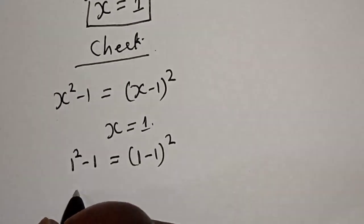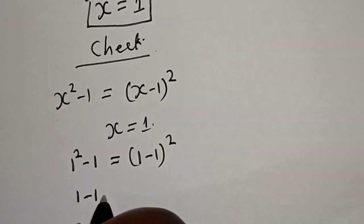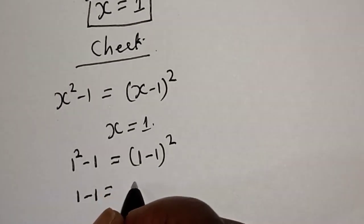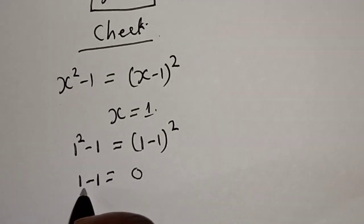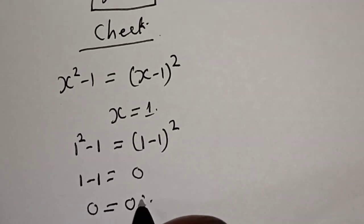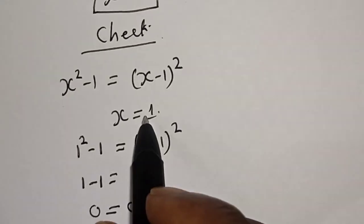Now 1 squared is 1, minus 1 is equal to (1 minus 1) squared. This is 0. Then 1 minus 1 here is also 0, which is equal to 0. We satisfy the given equation at x is equal to 1.